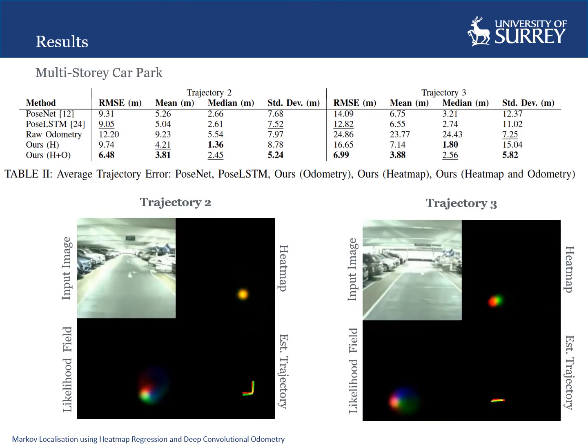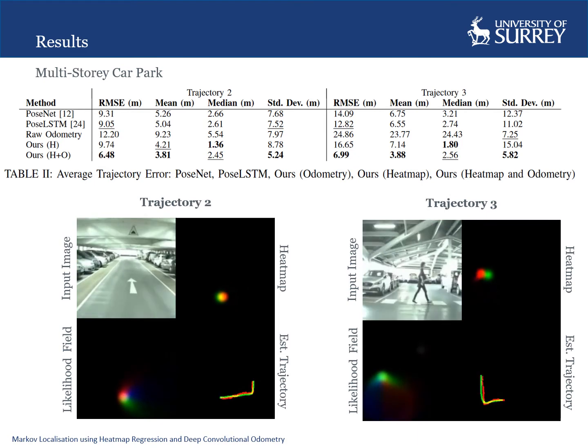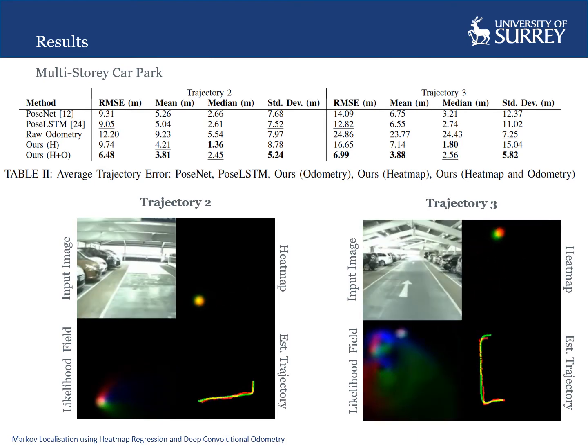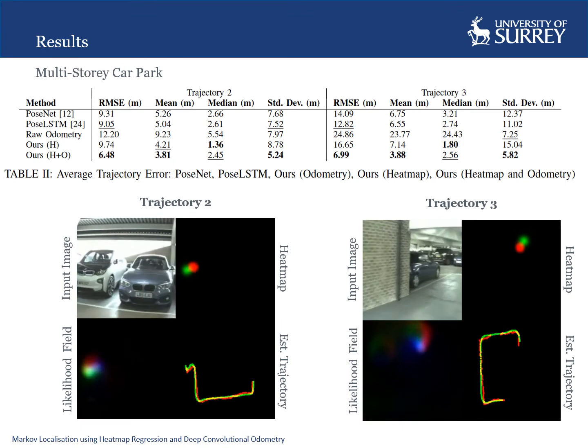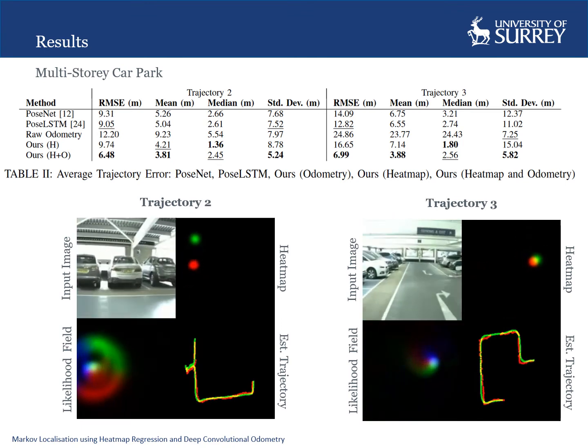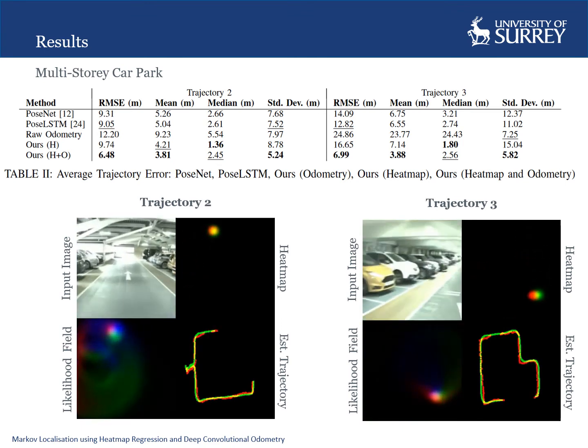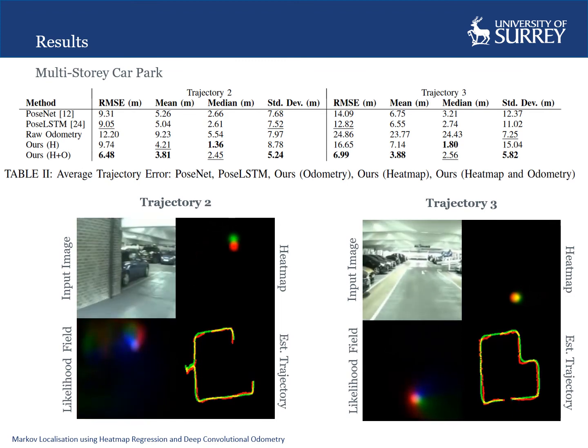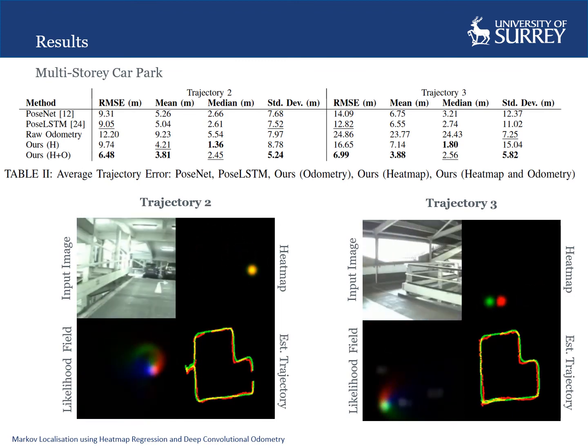One of the main advantages of our approach is the ability to generalize to self-similar environments. Therefore, we evaluate the approach on a multi-story car park, as they are self-similar within each floor as well as across multiple floors. We compare against two state-of-the-art localization approaches, as well as raw odometry measurements.